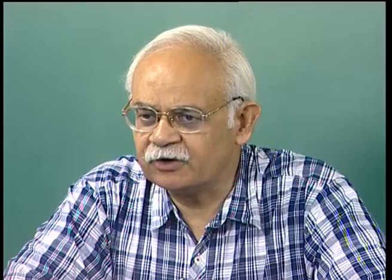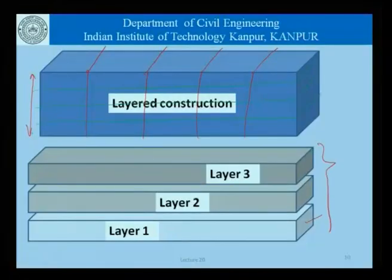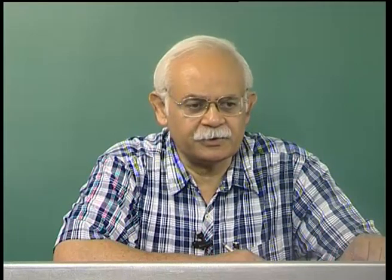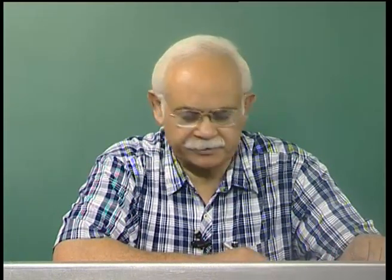Roller compacted concrete refers to this kind of layered construction where each layer of concrete is cast and then compacted by moving rollers on the surface. To that extent, it is similar to compaction of soil. When we do road construction or consolidate soil, we move rollers layer by layer to compact it — and that is exactly what we do when compacting this concrete.